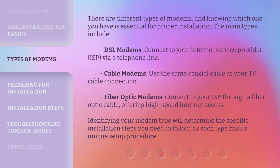There are different types of modems, and knowing which one you have is essential for proper installation. The main types include: DSL modems, which connect to your internet service provider (ISP) via a telephone line; cable modems, which use the same coaxial cable as your TV cable connection; and fiber optic modems, which connect to your ISP through a fiber optic cable, offering high-speed internet access. Identifying your modem type will determine the specific installation steps you need to follow, as each type has its unique setup procedure.